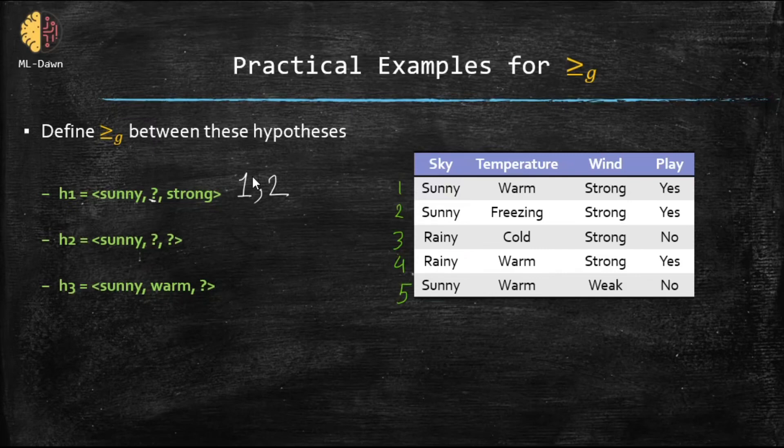Hypothesis number three, h three. We need sunny and warm about first and second attributes and we don't care about the third one. Sunny and warm, there would be number one and number five. Two doesn't satisfy that because two has freezing for temperature, but we require it to have warm for hypothesis number three. And for hypothesis number two, we just need the first attribute to be sunny and we don't care about the second and third attribute. Here we have example number one, number two, and number five. Basically, a collection of the examples that can satisfy both h1 and h3.